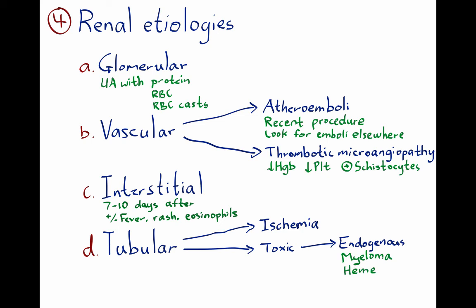In the urine, if you get a lot of heme positivity without red cells, it indicates heme pigment-induced ATN. If you get a strongly positive protein-to-creatinine ratio with a negative dipstick, it's indicative of myeloma nephropathy. The last etiology is crystal-induced ATN, which can happen with insoluble crystals like acyclovir, for example — so one needs to take a thorough drug history.